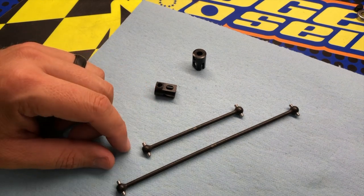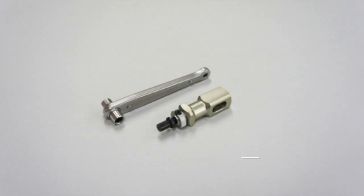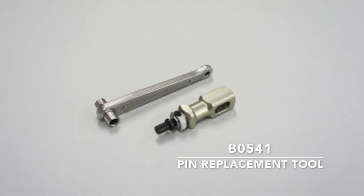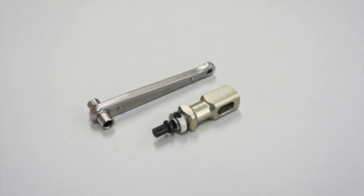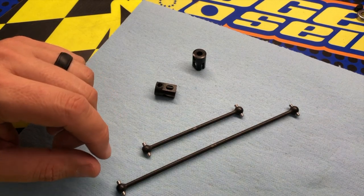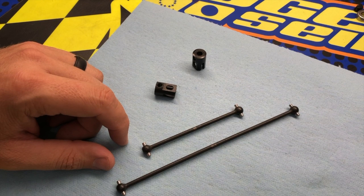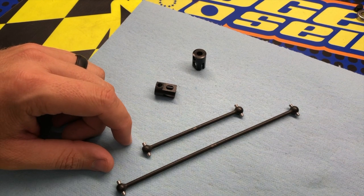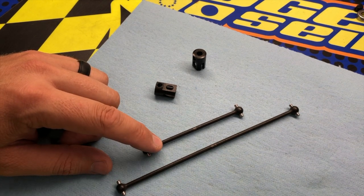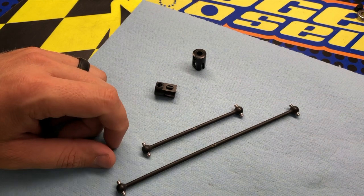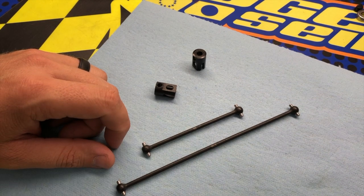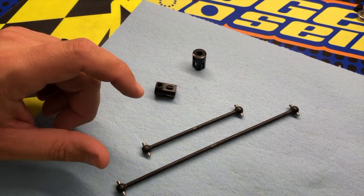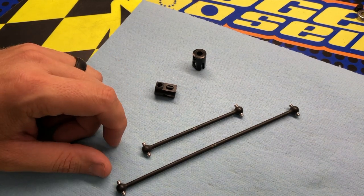It's really easy to do using the Mugen driveshaft pin tool, and you can keep your drivetrain working free and more efficient. It ends up being less expensive as well, because replacing these bones from time to time or the pins is much cheaper than replacing the entire standard or stock center universal.